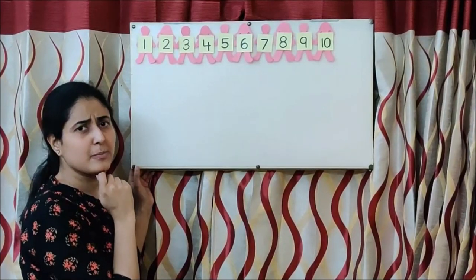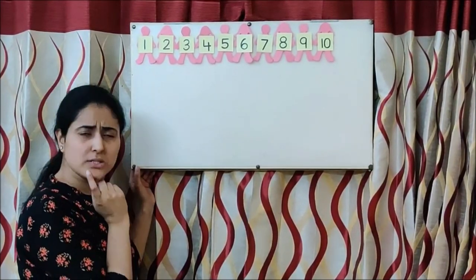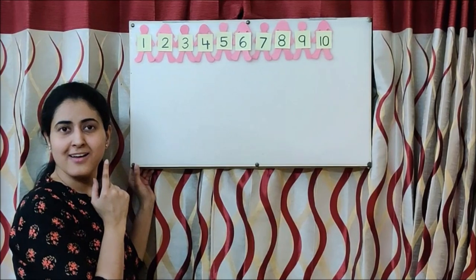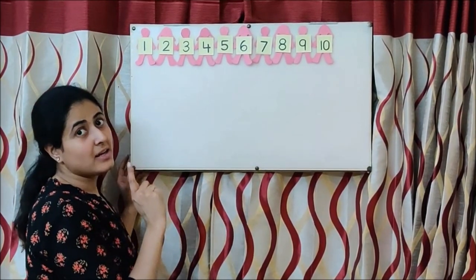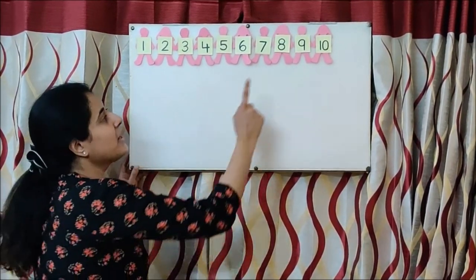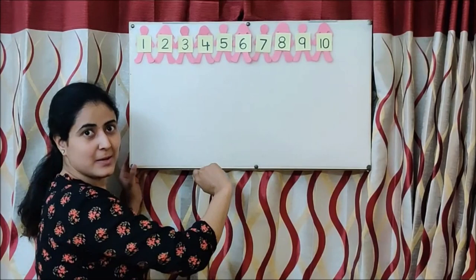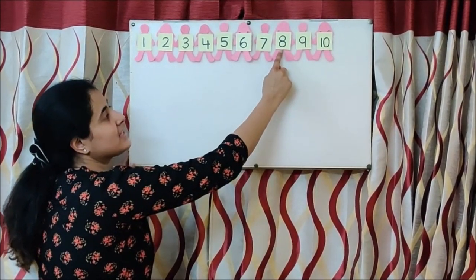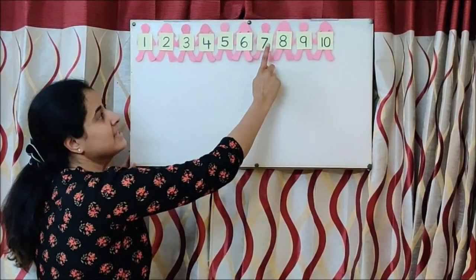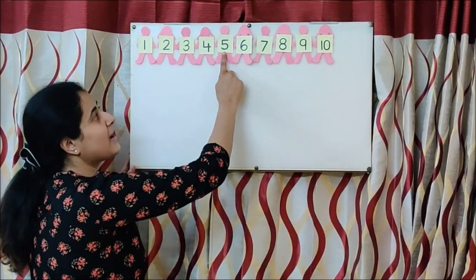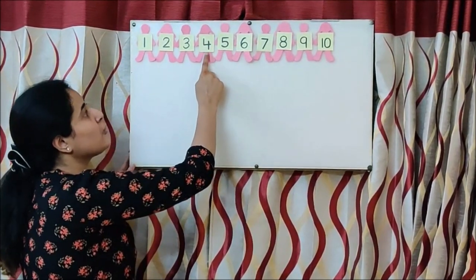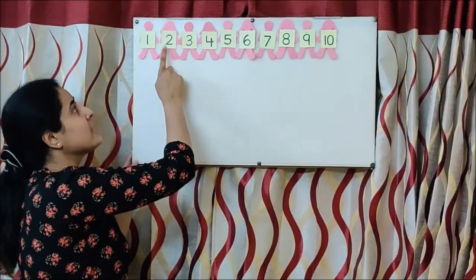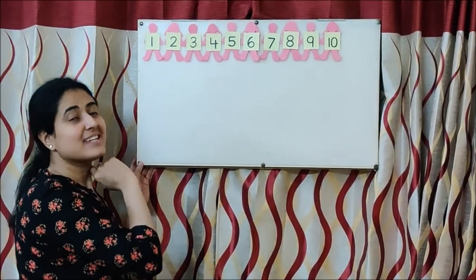Now we just sang for boys. What about girls? Let us start from number ten for girls. Ten little, nine little, eight little Indians. Seven little, six little, five little Indians. Four little, three little, two little Indians. One little Indian girl.